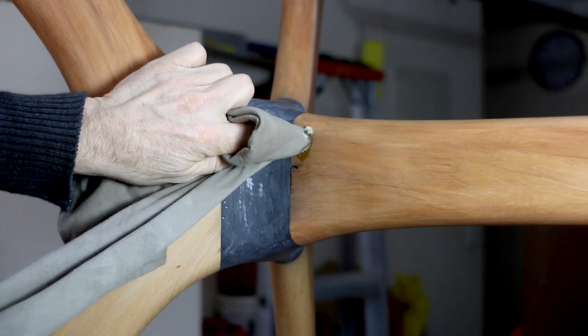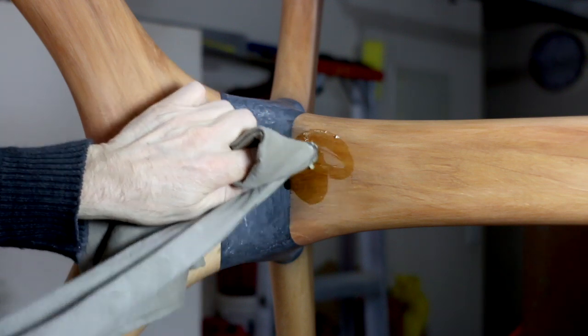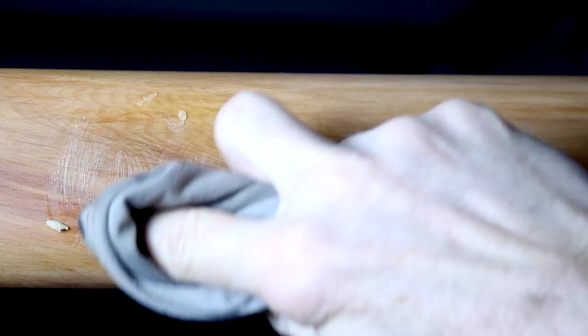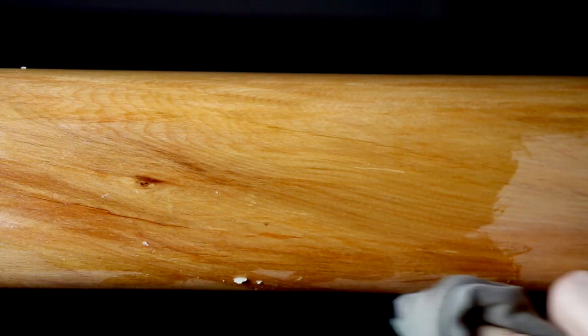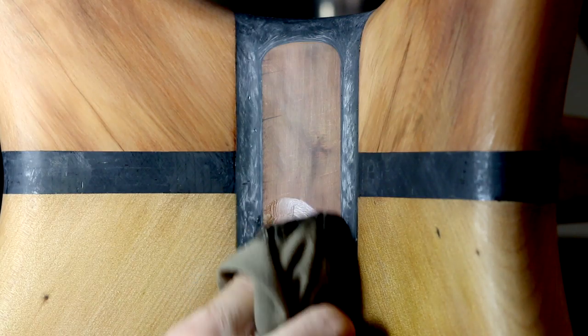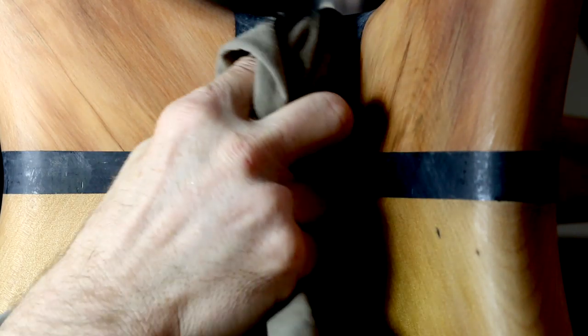I could then start applying my final layers of canuba wax. I really like that combination - shellac followed by canuba wax. It seems to give me a really nice satin finish.